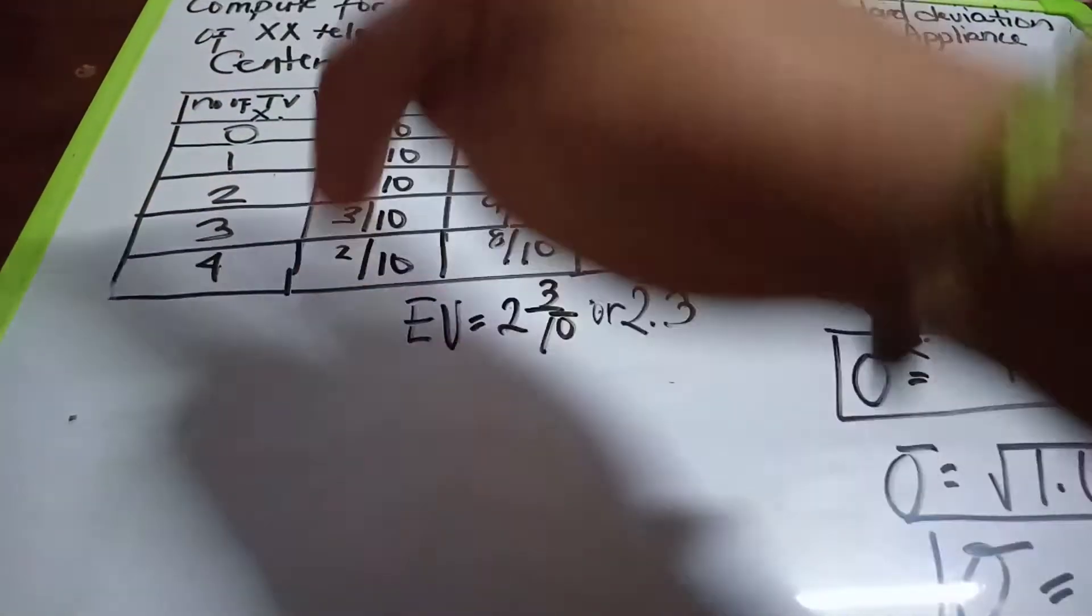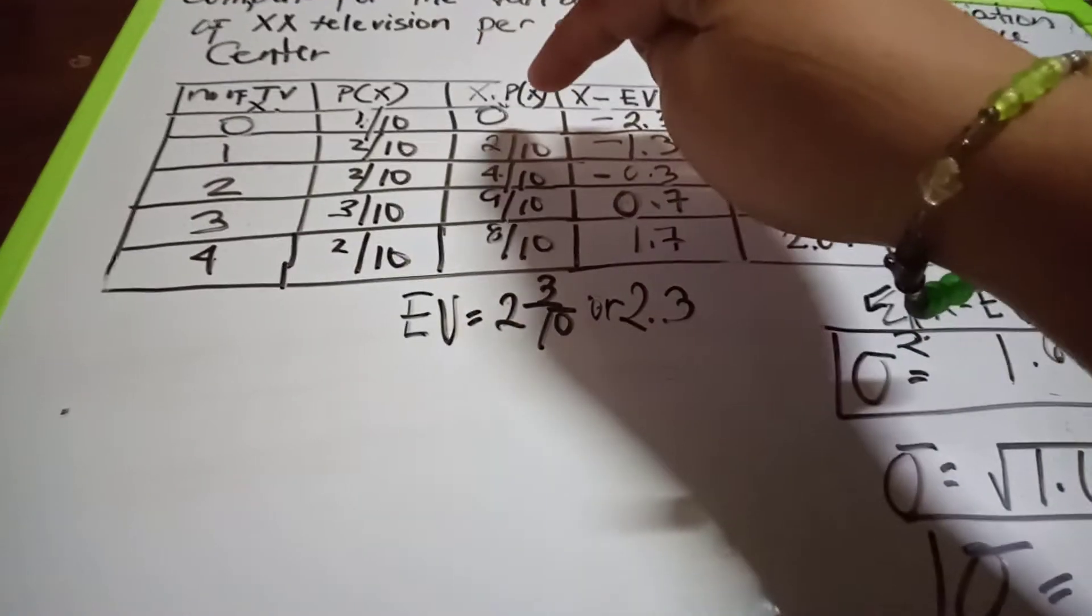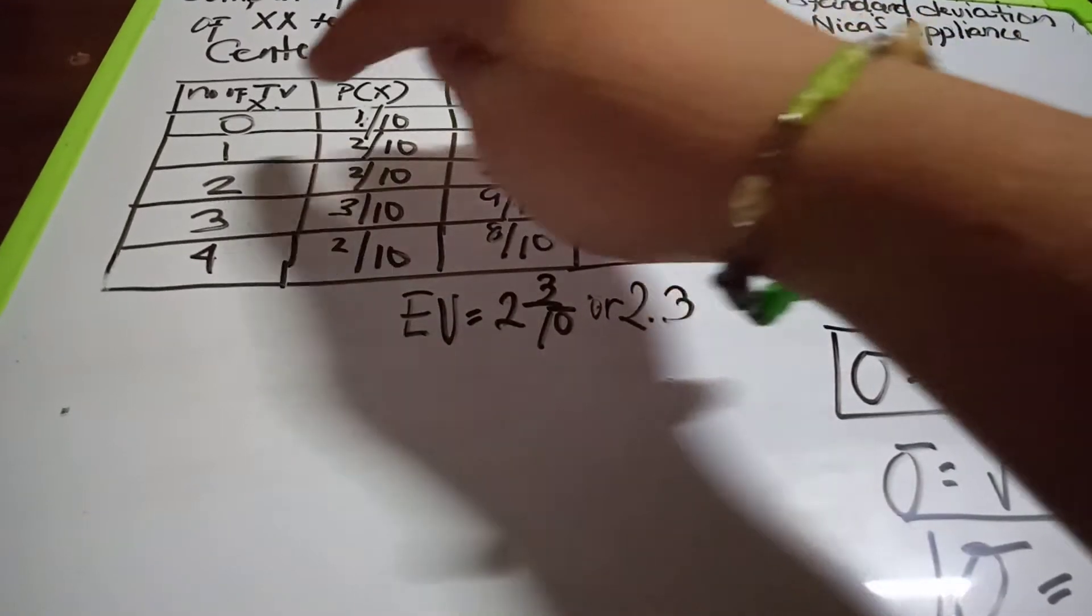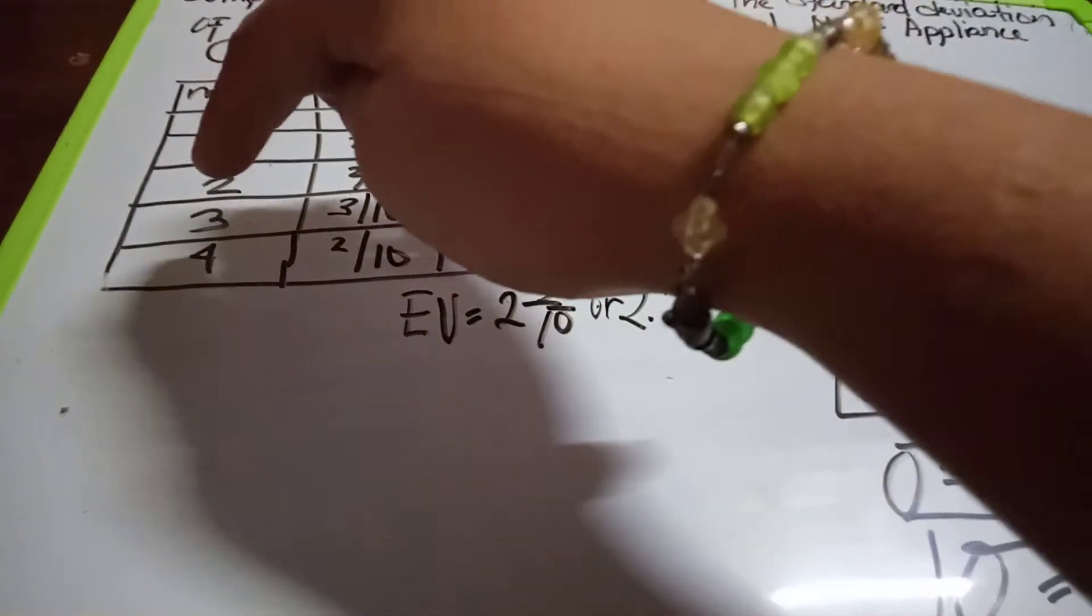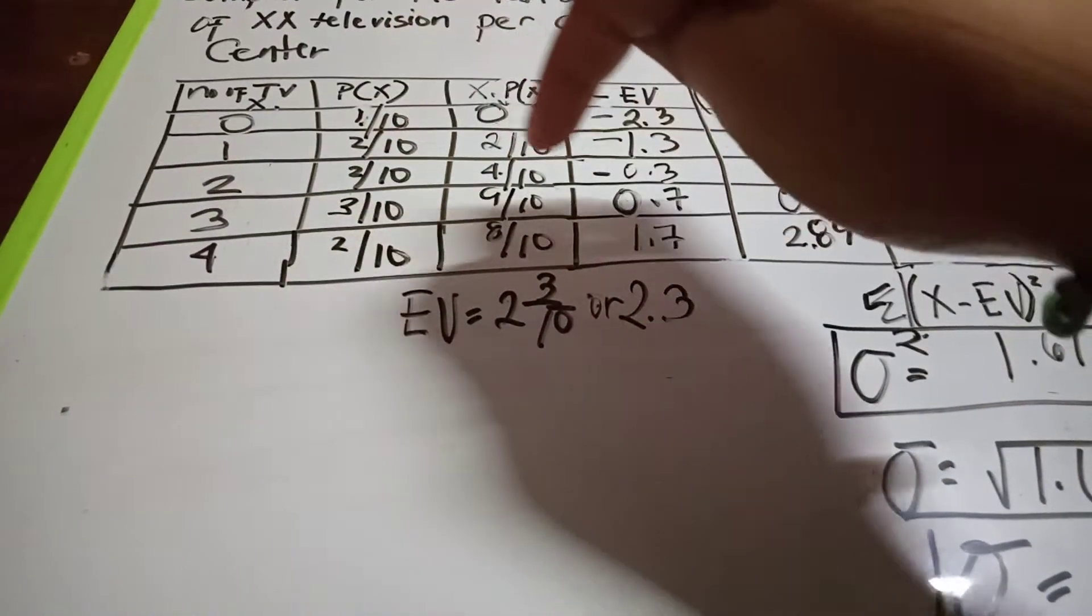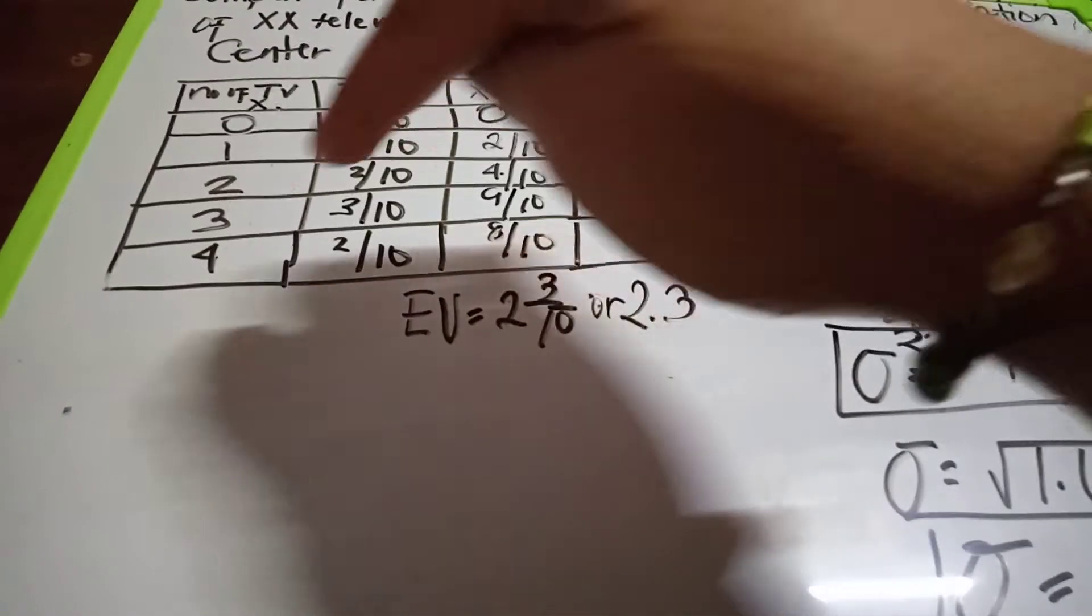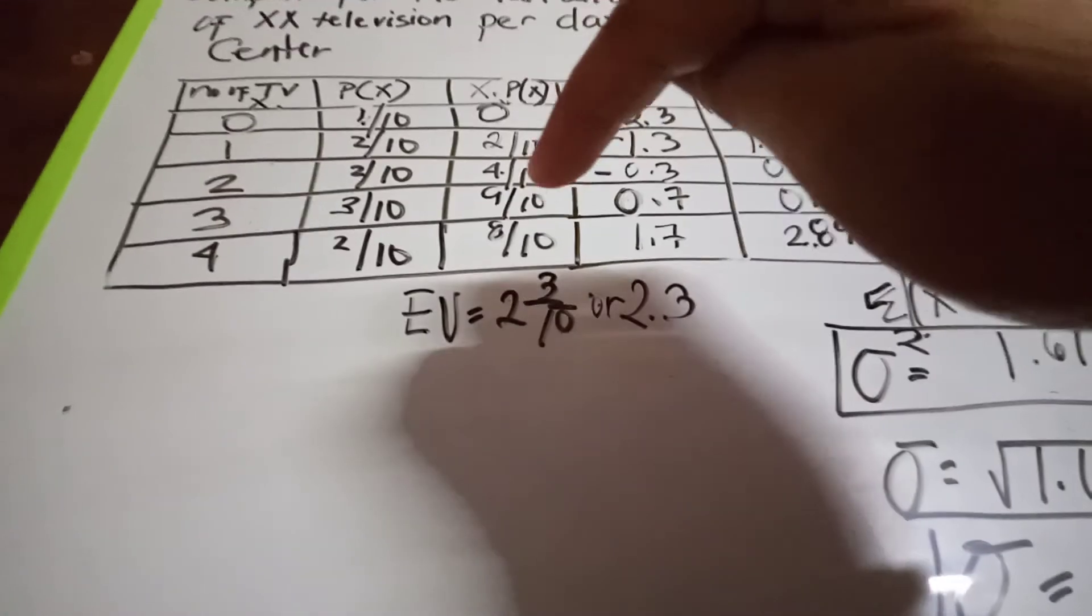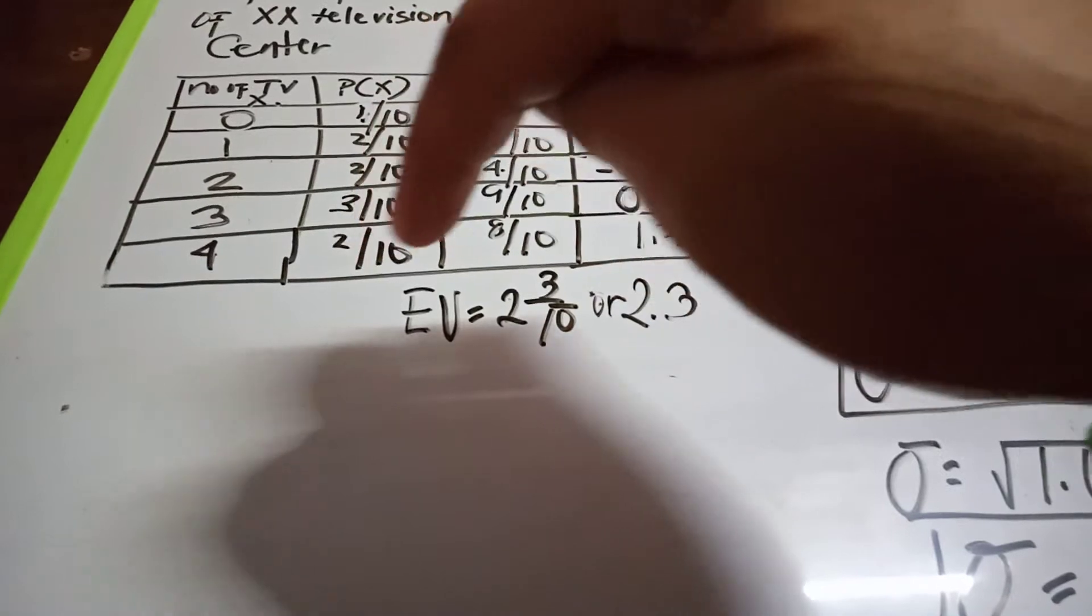In getting x times P(x), we multiply zero times one over ten, which equals zero. One times two over ten equals two over ten. Two times two over ten equals four over ten. Three times three over ten equals nine over ten.